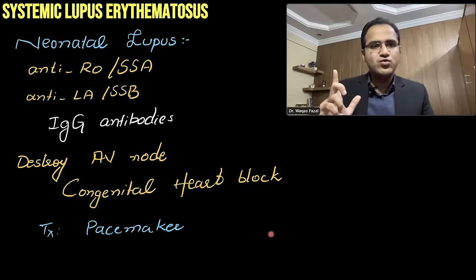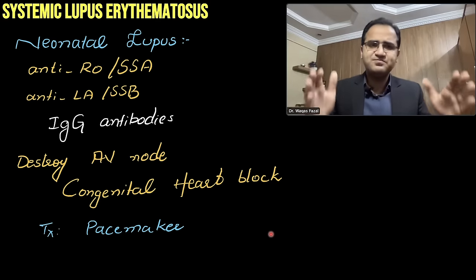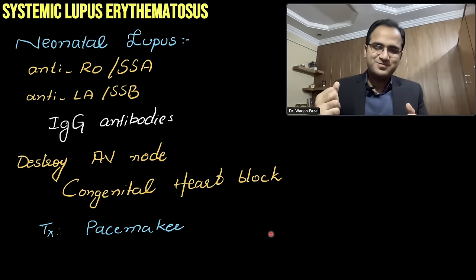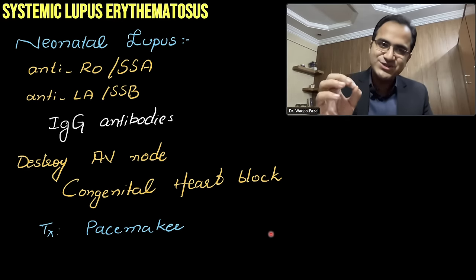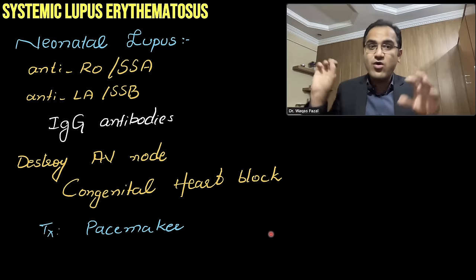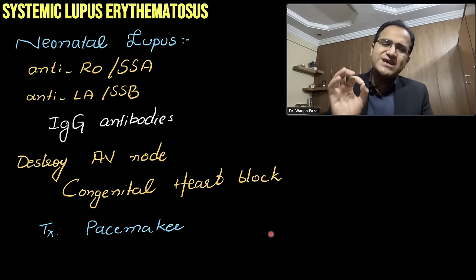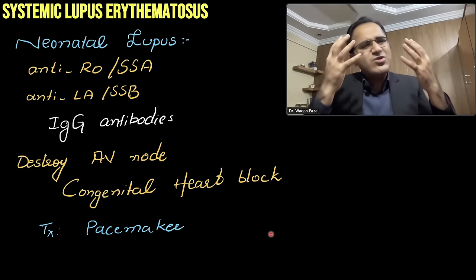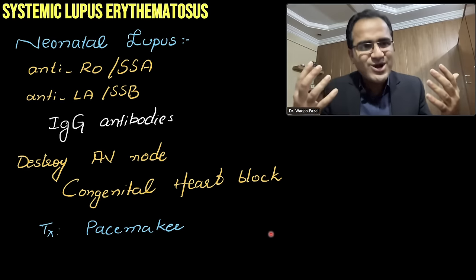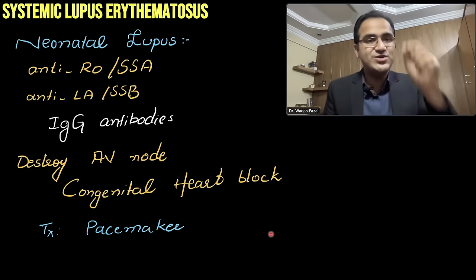Drug-induced lupus — remember the mnemonic SHIP: S for sulphur drugs, H for hydralazine, I for isoniazid, P for pyrazinamide. If a patient takes these drugs and develops rashes similar to SLE rashes, and anti-histone antibody testing is positive, that is drug-induced SLE. Remember, drug-induced SLE is not severe — it only has cutaneous manifestations, does not cause lupus nephritis, pleuritis, or affect the brain or vital organs, and it stops as soon as you stop the drug.